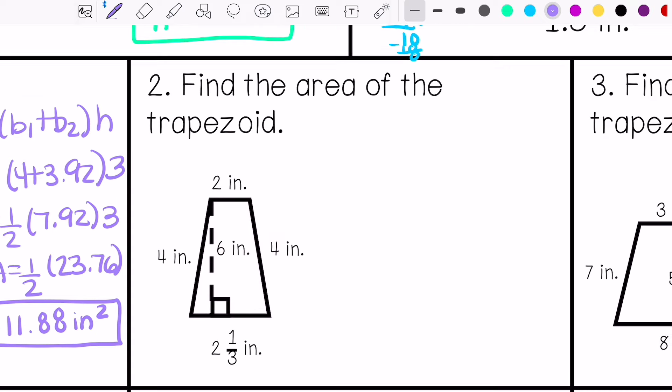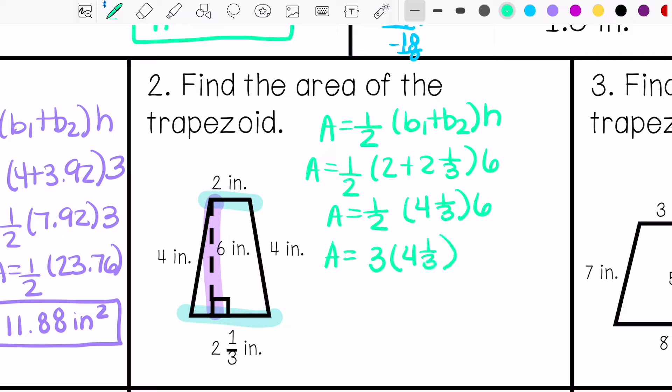Alright, example number two, find the area of the trapezoid. This is my height, my two bases. I'm going to write my formula. So my area equals 13 inches squared.